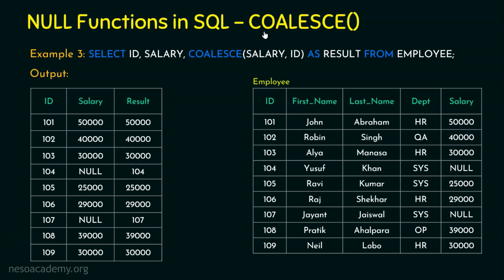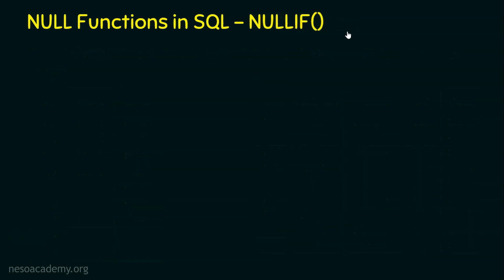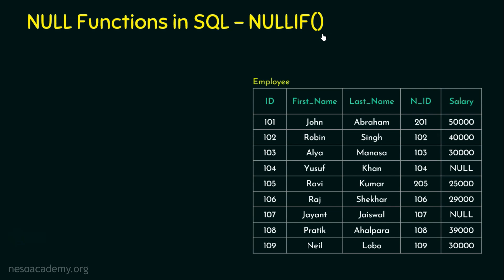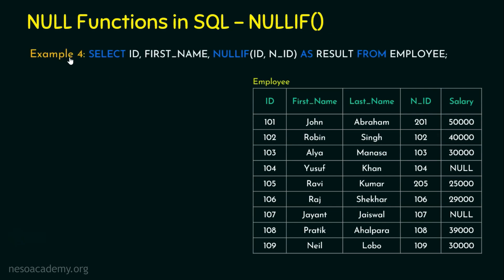We are done with the second null function, COALESCE. Let's move on to the third null function, which is NULLIF, using the same employee table. Example number 4: SELECT id, first_name, NULLIF(id, new_id) AS result FROM employee. For understanding NULLIF, I have added a new_id column — assume the company assigned each employee an id and later revised it as a new id, so employees now hold new id values.